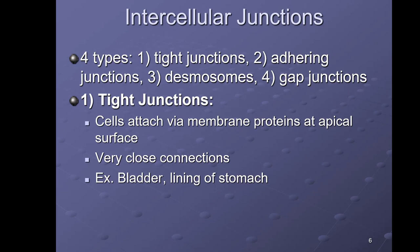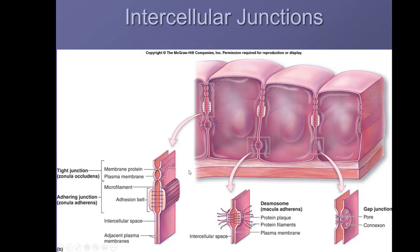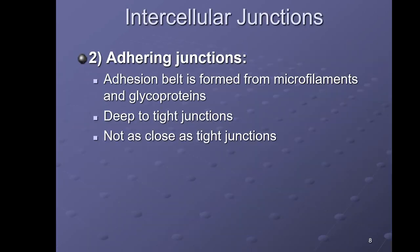A good example of where you need tight junctions is the bladder, where you don't want anything to seep through. These close, tight connections are why they're called tight junctions. Looking at the picture, you can see the proteins near the apical surface holding the cells together, and in the close-up image those tight junction proteins are clearly visible.